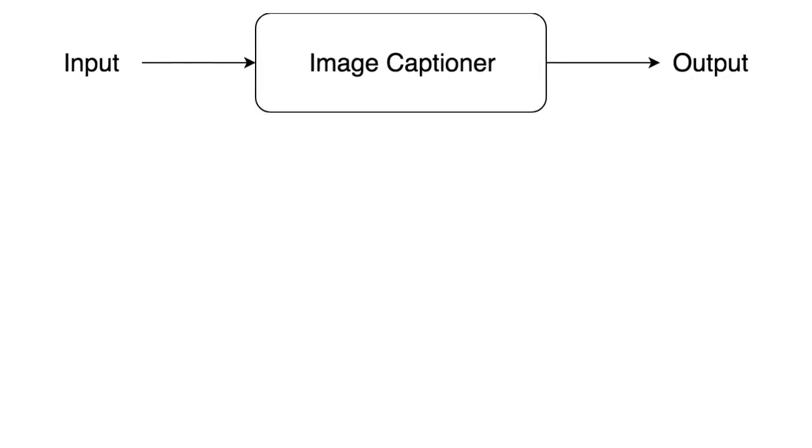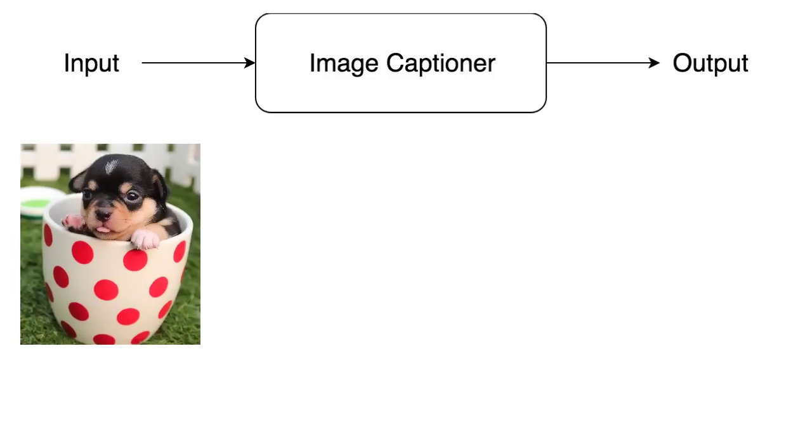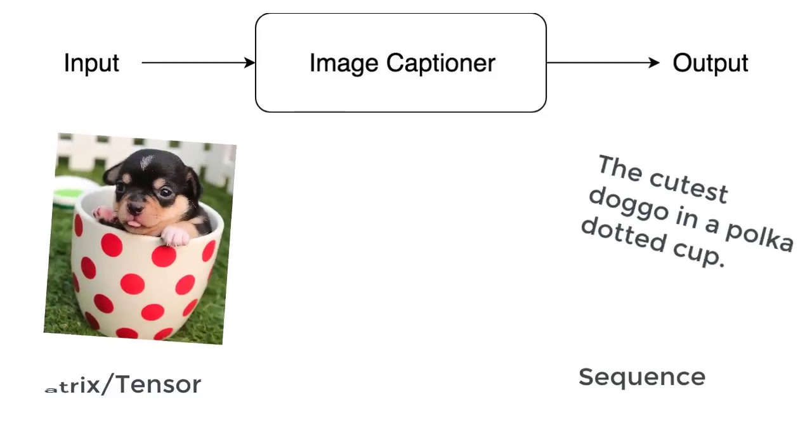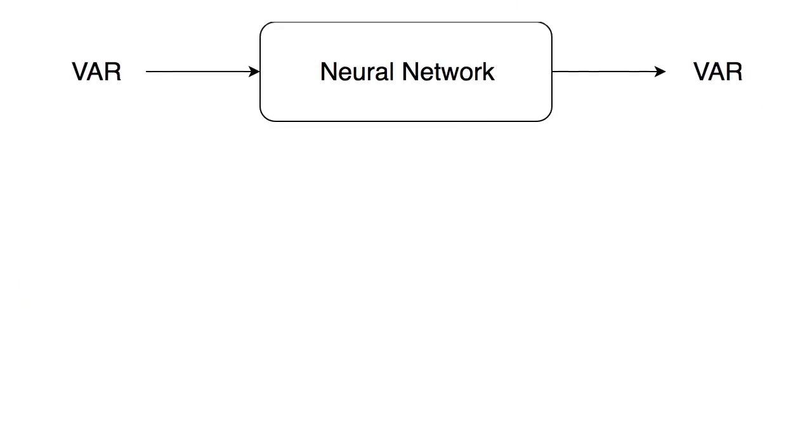Let's define the structure of our problem now, identifying the inputs and the outputs. The input to an image captioner is some kind of image, like a matrix or a tensor. The output is a sentence, basically a sequence. A sequence is a set of variables that has some defined ordering to it. Sentences are sequences because one word has to come after another, and in that order to have some meaning. I said before that neural nets are mathematical functions that map one kind of variable to a variable of another kind.